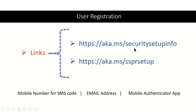Users can navigate to either aka.ms/mysecurityinfo or aka.ms/ssprsetup to register. The second link is newer and converges the MFA and SSPR registration processes. During registration, users provide at least one verification method — such as an OTP sent to their mobile phone, an email OTP, or the Microsoft Authenticator app. Admins can also require multi-method verification.